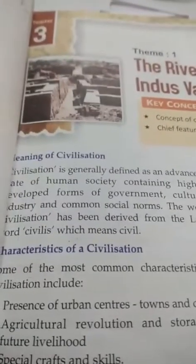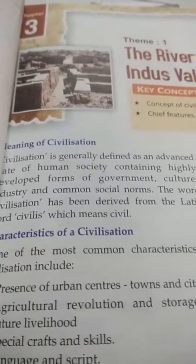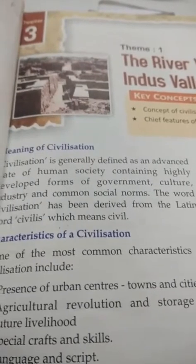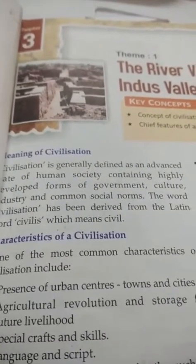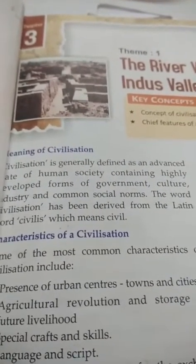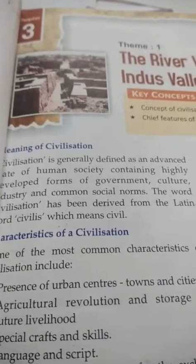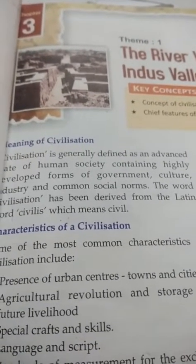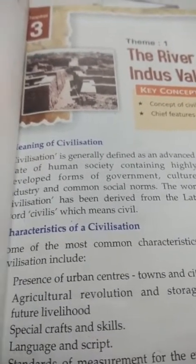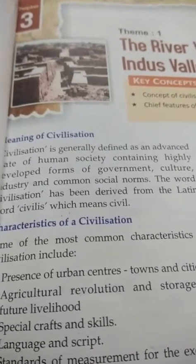What is civilization? Civilization is an advanced state of human society which contains a highly developed form of government, culture, industries, and common social norms. The word civilization has been derived from the Latin word 'civilis', which means civil.